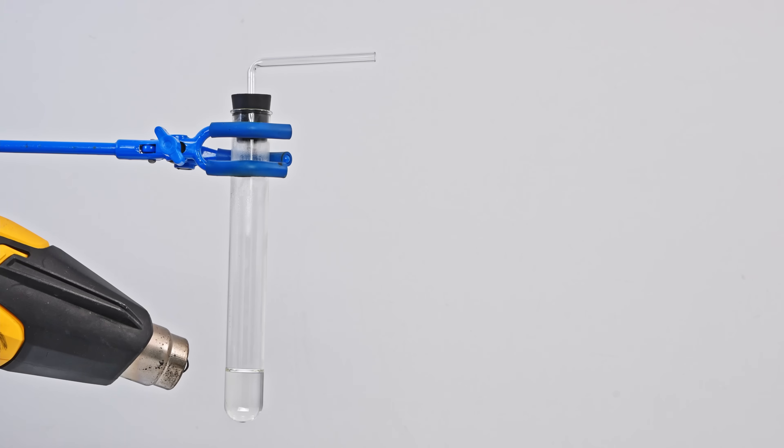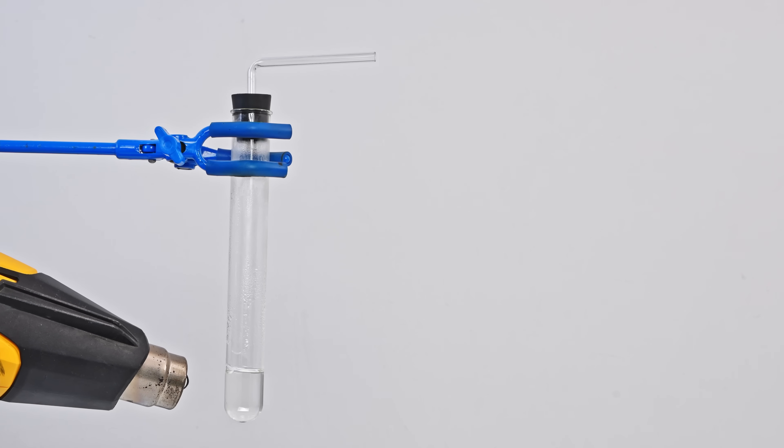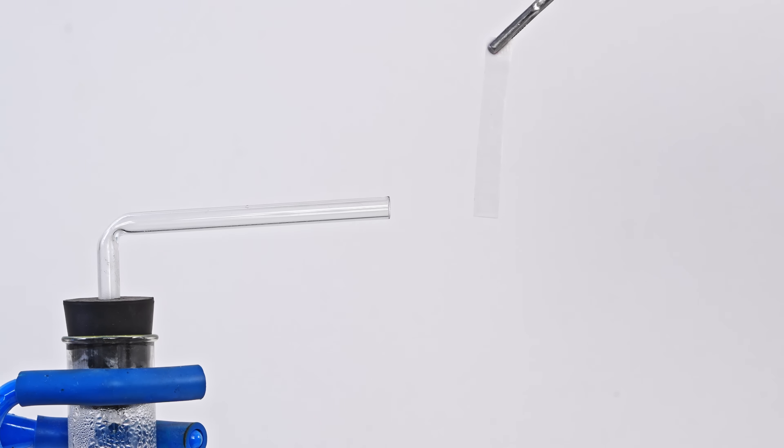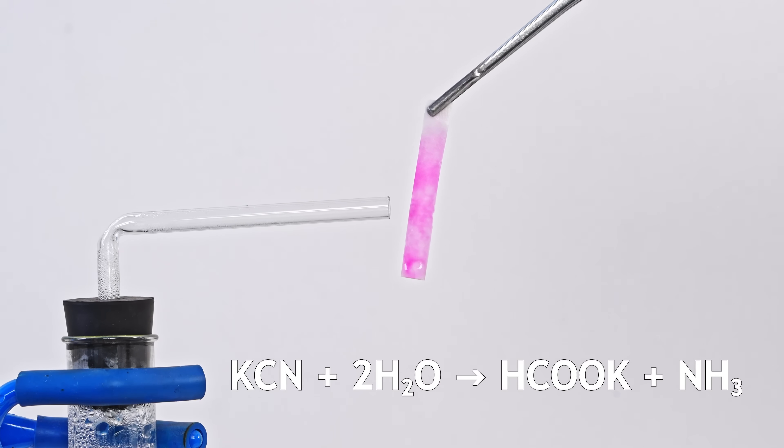When heated, a solution of potassium cyanide releases ammonia, which can be detected by bringing a piece of paper soaked in phenolphthalein into contact with the gas. Also, a solution of potassium cyanide decolorizes an acidified solution of potassium permanganate.